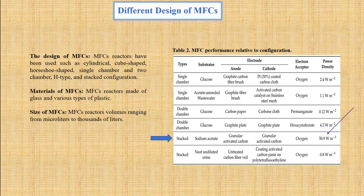Next is the design of microbial fuel cells. Fuel cell design is critical for determining the success of a microbial fuel cell or microbial electrolysis cell. Different types of reactors have been used, such as cylindrical, cube-shaped, horseshoe-shaped, single-chamber and two-chamber, H-type, and stacked configurations, made of glass or various types of plastic. Table 2 shows how performance is affected by configuration. In stacked configuration, the maximum power density observed was 50.9 W/m³, when both electrodes are granular activated carbon and sodium acetate is used as a substrate.